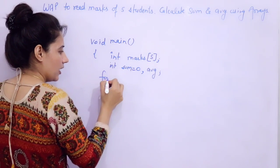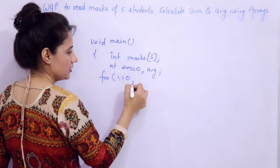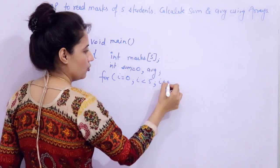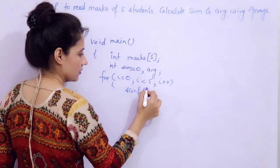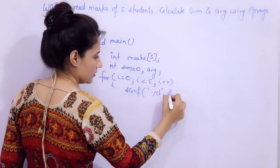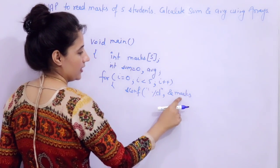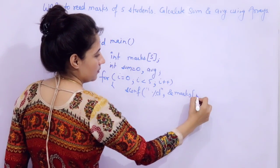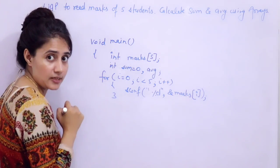Now, read. How to read marks of 5 students? Just write a for loop and use the scanf function. I hope you are clear with this syntax. Here you will write the name of the array, which is 'marks', then marks[i], and that's it.